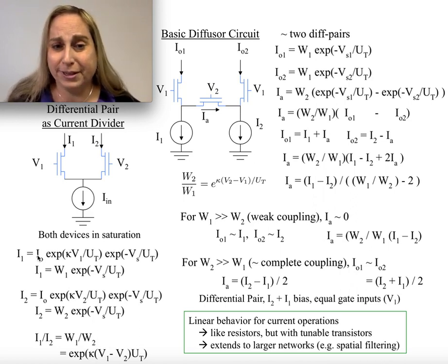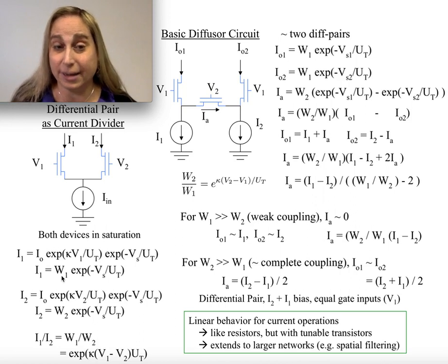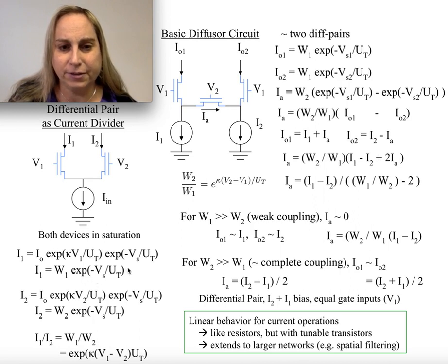And I do this partially because it becomes pretty easy just to go, well, let me just take all of this piece and lump that into one constant, which I'm going to just call W1. Obviously, that has, in this particular form, it's not just, it's not an abstracted weight, it's a current. But we'll go with that. And then it has an exponential function of that source voltage, this middle node here, over UT.